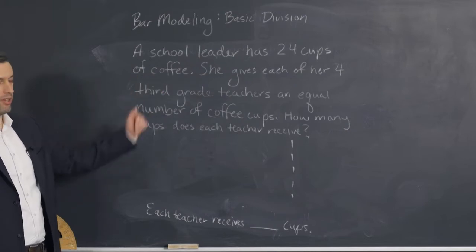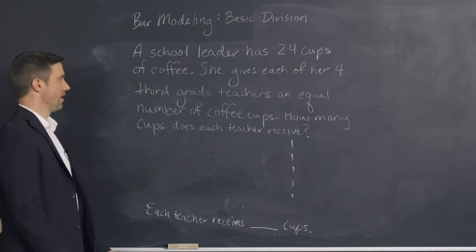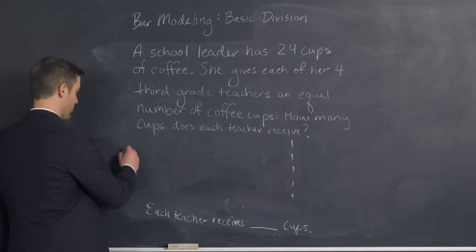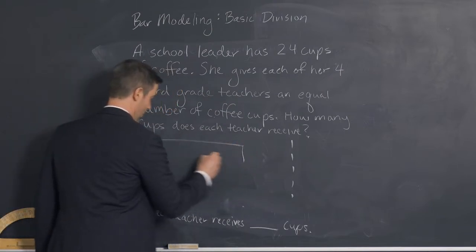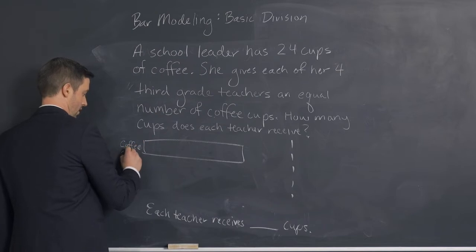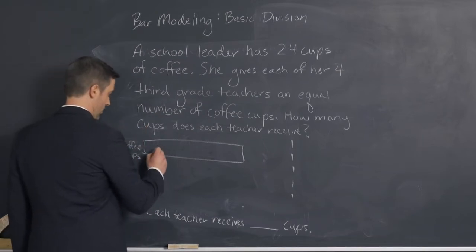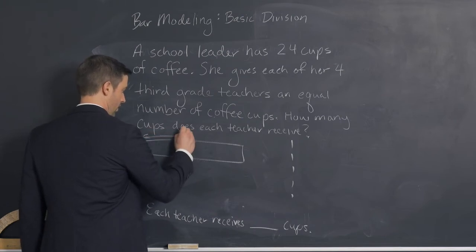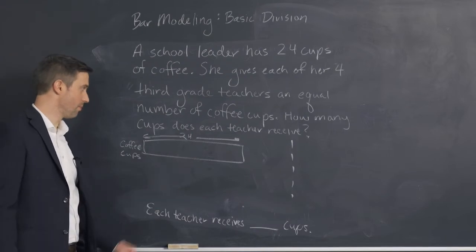We're going to go back through it and read it one more time, again stopping where we can draw something. A school leader has 24 cups of coffee. So we have the school leader—actually let's call those cups of coffee, because that's what I'm representing with the bar here. Coffee cups. I said that there were 24 of them, so I can denote the quantity. You can put the quantity on top or on bottom.